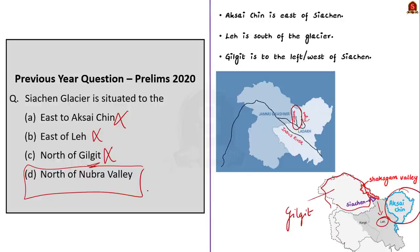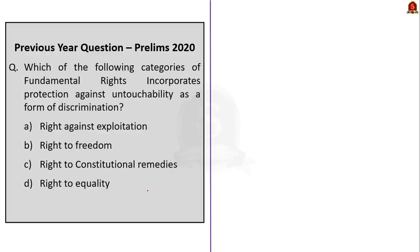Now look at the next question. It asks: which of the following categories of fundamental rights incorporates protection against untouchability as a form of discrimination? Option A: right against exploitation. Option B: right to freedom. Option C: right to constitutional remedies. Option D: right to equality.